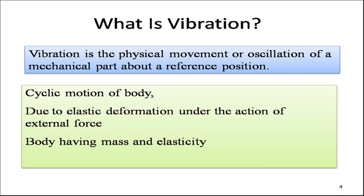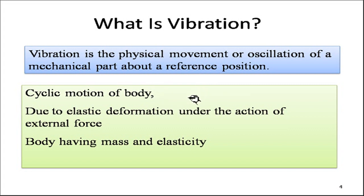First, we'll see what vibration is. Vibration is the physical movement or oscillation of a mechanical part about a reference position. It is a cyclic motion where a body moves about a particular reference position and repeats its position again and again. This kind of motion is possible due to elastic deformation under the action of external forces.